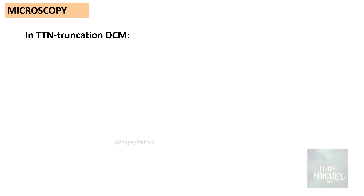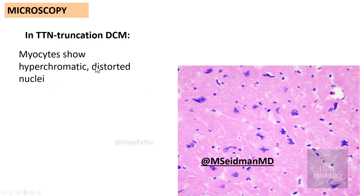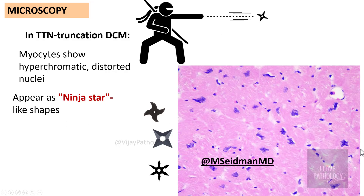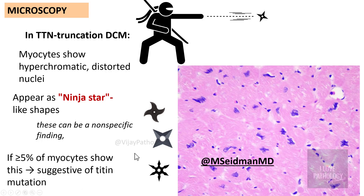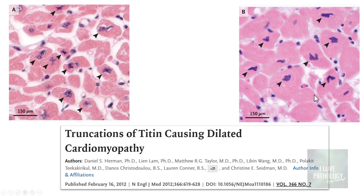A specific finding is TTN truncation DCM, where 10 to 20% of cases show myocytes with hyperchromatic and distorted nuclei that look like a ninja star. Though this is a nonspecific morphological finding, if found in more than 5% of myocytes it suggests the cardiomyopathy is due to titin mutation.